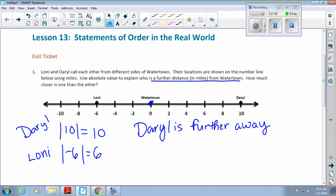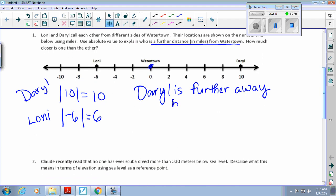The next part of that question is, how much closer is one than the other? By four. How did you get that? I subtracted 10 from 6, I'd be at 4, because I knew that they would only be like four apart. Very good. So Daryl is further away by four miles.